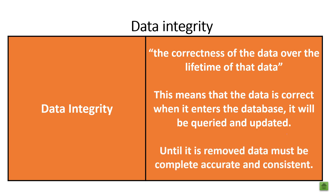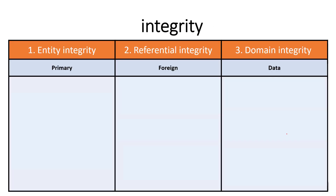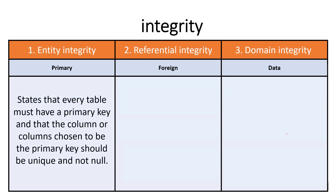There are three key types of integrity used in databases. The first is entity integrity, which acts on the primary key. It states that every table must have a primary key, and the column or columns chosen as the primary key should be unique and not null. This forces the rule that you always have a primary key in every table and it always has a unique value.